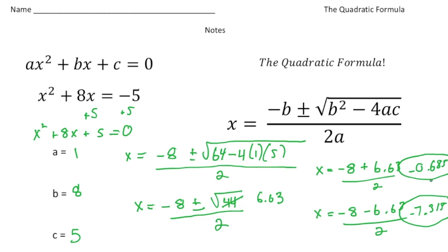To backtrack: the first thing you have to do is make sure that the equation is written in standard form. Then, once you do that, you extract the a, b, and c values and plug them into the formula. You have to be really careful, especially with the square root part. And then once you do that, you can solve and get both solutions for x.